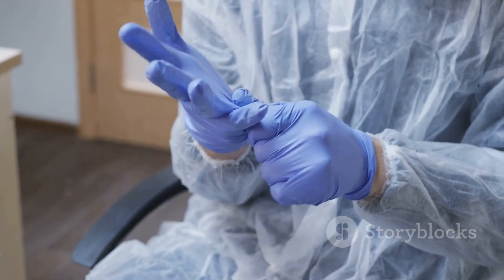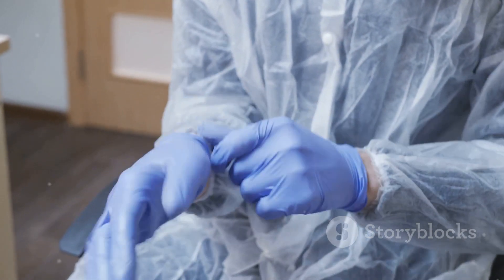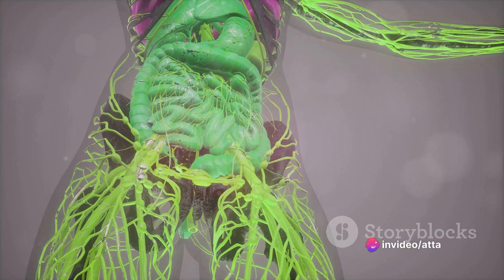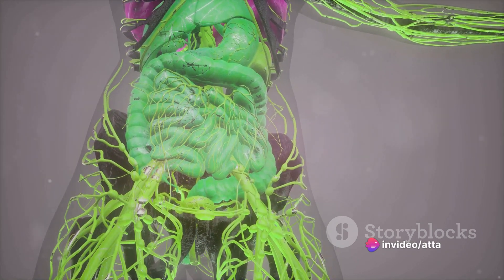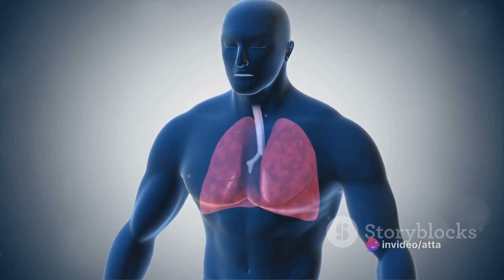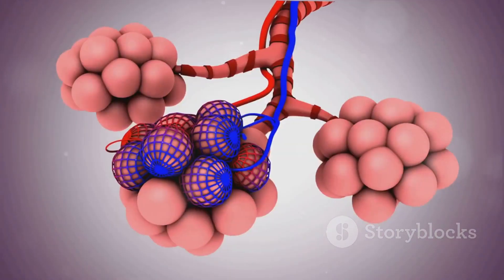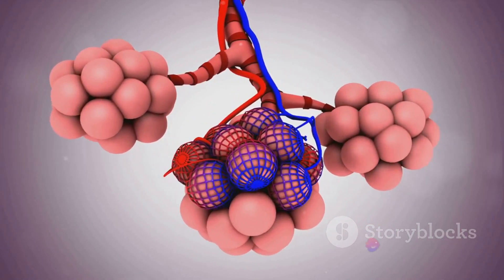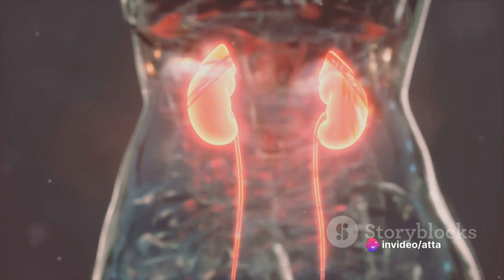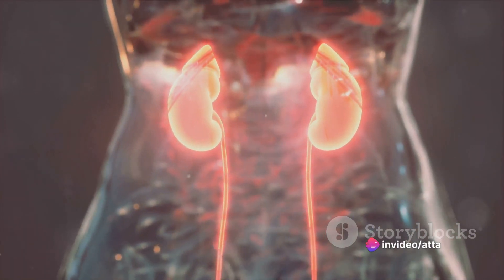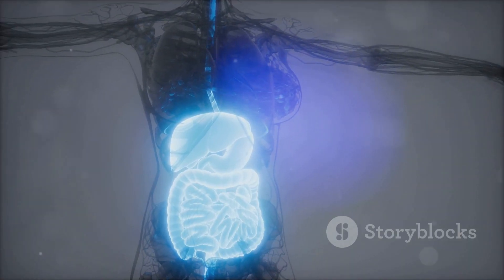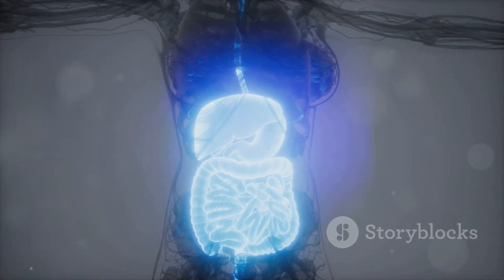We start our journey with epithelial tissue. This tissue acts as a barrier, protecting our body from the outside world. It lines our organs and cavities, forming a protective layer. There are various subtypes, each with a unique structure and function. For instance, simple squamous epithelium, with its flat, scale-like cells, facilitates diffusion in areas like the lungs and blood vessels. On the other hand, the cube-shaped cells of simple cuboidal epithelium help in secretion and absorption in glands and kidney tubules. Each subtype plays a crucial role in our body's functioning.